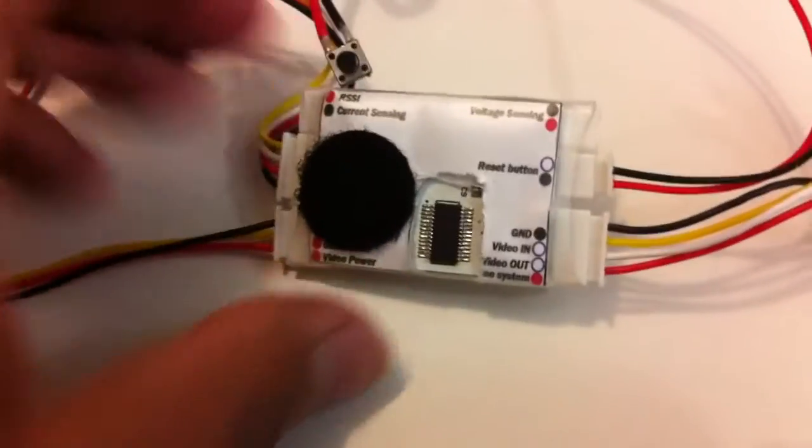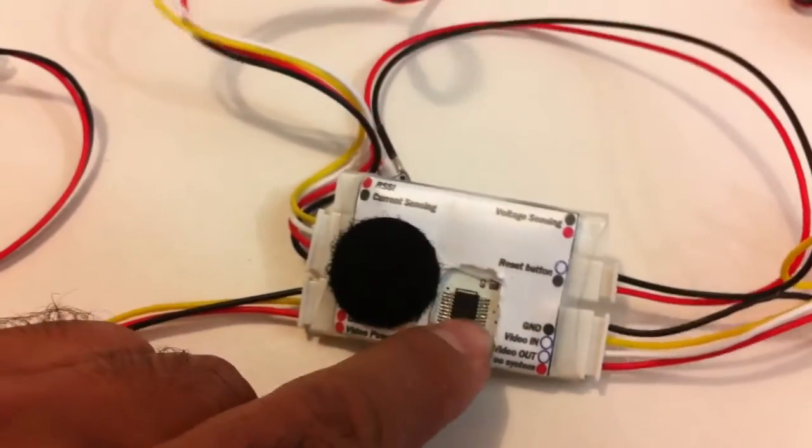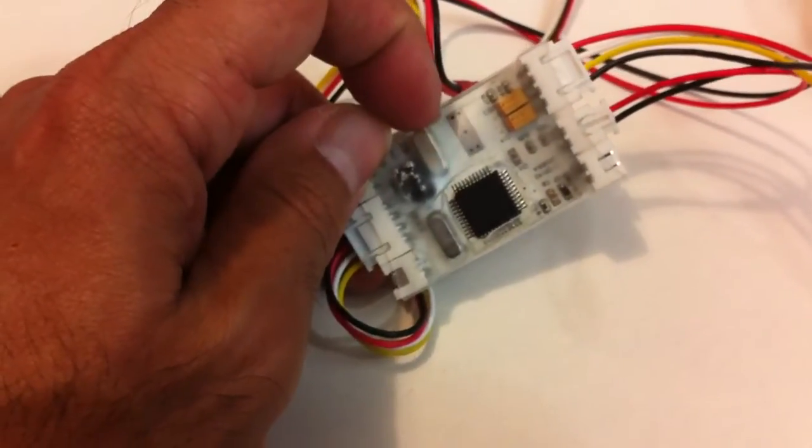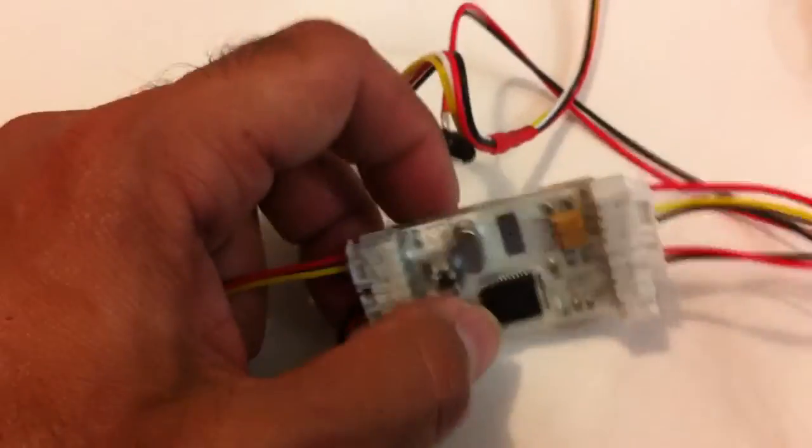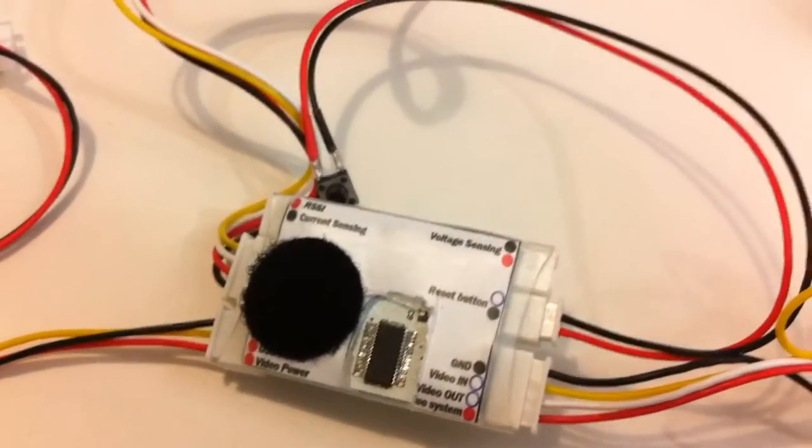What I've also done is I've actually cut away a little bit of plastic here just to allow ventilation for this chip which gets quite warm, and I've also done the same for the back. So that chip there has been cut away, the plastic, just to allow it to breathe a bit and I don't seem to have any issues with overheating or anything. And that's pretty much all there is to it.